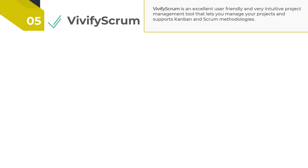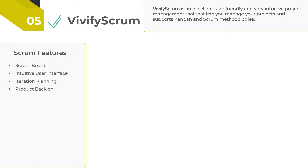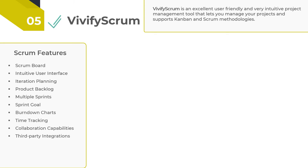The next tool that we have is Vivify Scrum. It is an Agile project management tool for teams that use either Scrum or Kanban frameworks. It is a rather easy-to-use software that comes with a clean and clutter-free interface, making it aesthetically appealing too. As a part of Scrum features, it allows the users to create their own Scrum boards and invite other users to collaborate on them and do Scrum sprints. Like any good Scrum tool, you'll have easy access to your product backlog and sprint backlog.